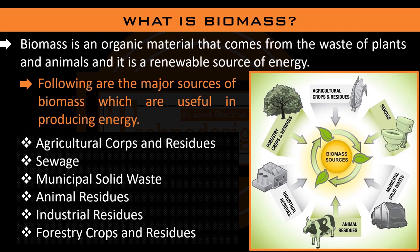Agricultural crops and residues: the waste of agricultural crops that most farmers burn will be useful in a biomass power plant. Sewage waste includes human residue and the waste in drain systems. Municipal solid waste is the waste in drain systems. Animal residues is the waste of animals. Industrial residues is the waste that is useless for industries. Forestry crops and residues is the waste present in forests. All these wastes can be converted into biofuel or biogas that can be used in a biomass power plant.